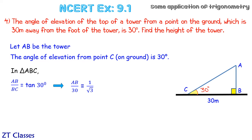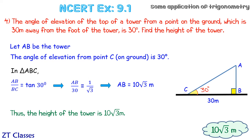Solving it, we'll get the value of AB as 30 upon root 3. Rationalizing the denominator, we'll get AB as 10 root 3. And that's our answer, the height of the tower is 10 root 3 meters.